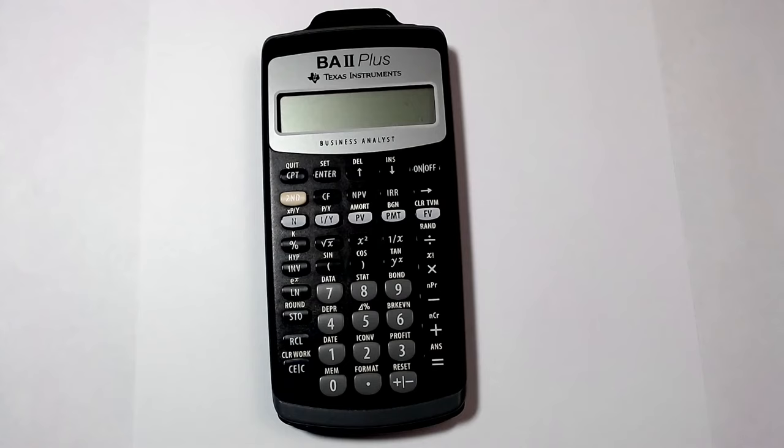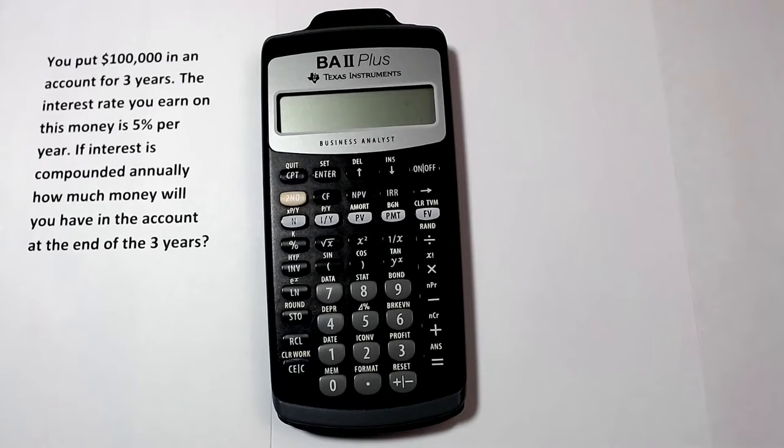Let's say you put $100,000 in an account for three years. The interest rate you earn on this money is 5%. If interest is compounded annually, how much money will you have in the account at the end of three years?